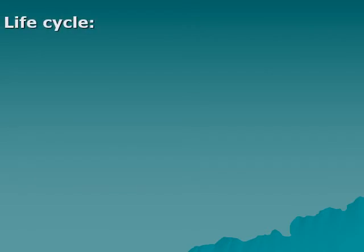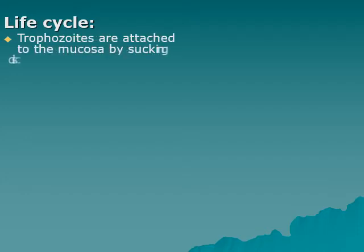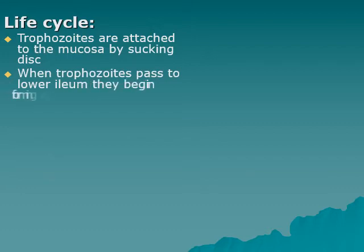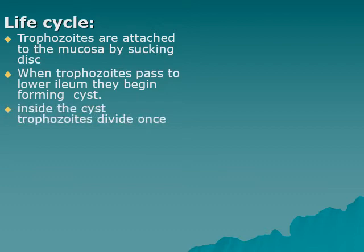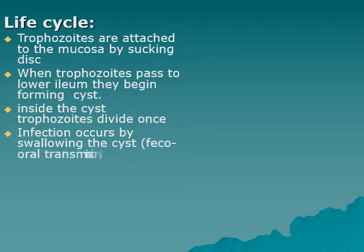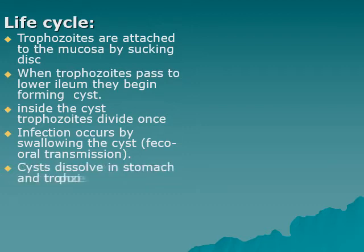The life cycle of Giardia is similar to that of Entamoeba. Trophozoites are attached to the mucosa by sucking discs. When trophozoites pass to the lower ileum, they begin forming cysts. Inside the cysts, the trophozoites divide once. Infection occurs by swallowing cysts — feco-oral transmission, similar to Entamoeba.